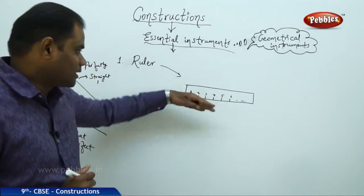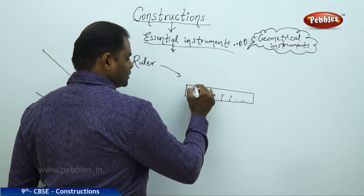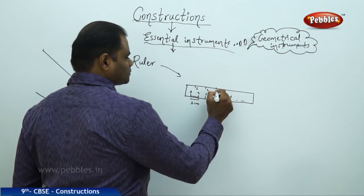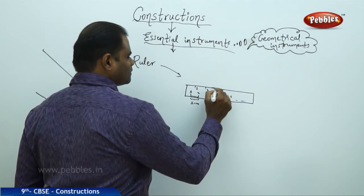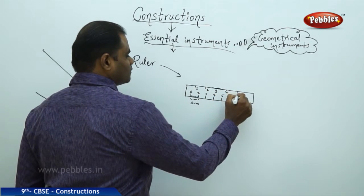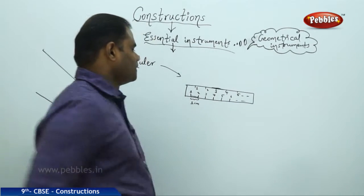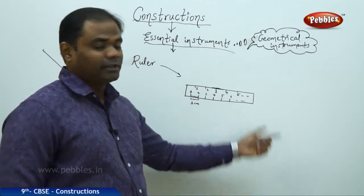And the other side of the ruler has the measurements in inches. So here I have them in inches, 1, 2, 3, 4, 5, etc. So I have the measurements here in centimeters and here in inches.